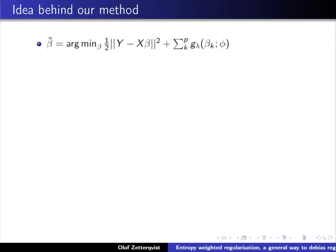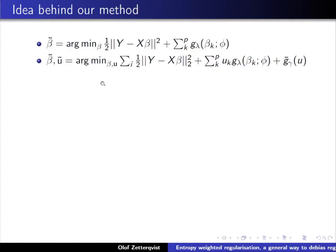The idea behind our paper is to start from the same minimization loss with a regularization penalty that can be split per beta_k, and extend it to include new parameters u—weights for each specific regularization term. We also add an additional regularization on these weights u. We want the weights to be non-negative and have a minimum at one, which I will explain shortly.